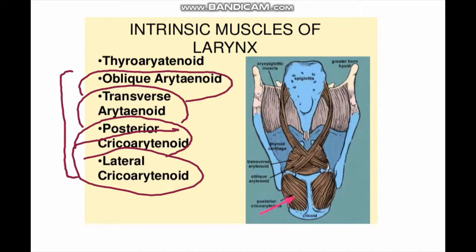This one is the posterior cricoarytenoid, this oblique muscle is the oblique arytenoid, and this horizontally placed muscle is the transverse arytenoid. The lateral cricoarytenoid is not shown in this picture. The other categories include thyroarytenoid, vocalis, and cricothyroid muscle, and those which alter the shape of the laryngeal inlet are the aryepiglotticus and thyroepiglotticus.